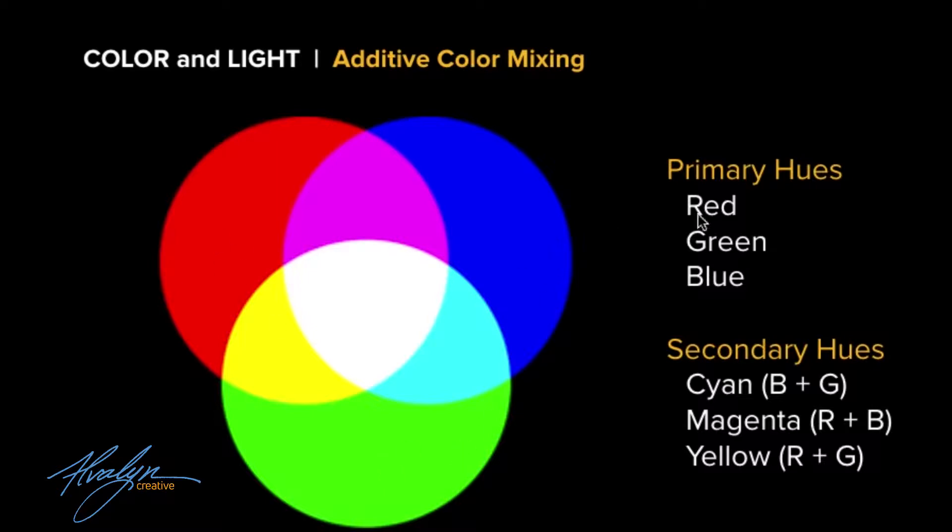Those foundational hues are known as primary hues, and they're primary, meaning you start with them. They are first, they exist first. You can't mix any other colors to create them, but you mix them to create all the other colors. So in light, our primary hues are red, green, and blue.